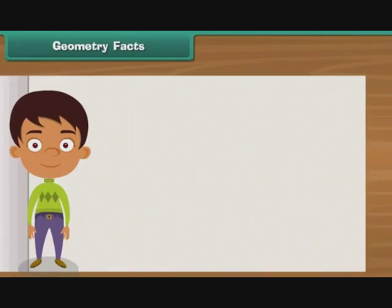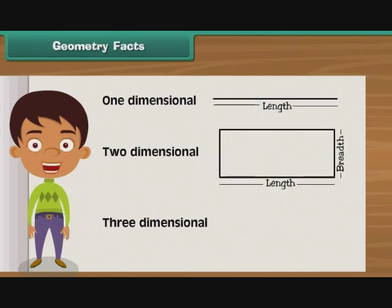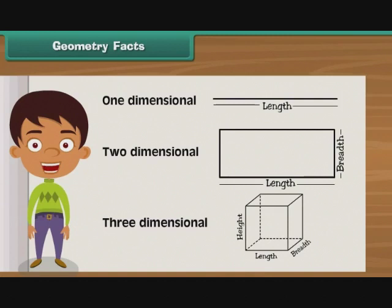Geometry facts. The geometry facts are generally divided into three parts: one-dimensional, two-dimensional, and three-dimensional. The one-dimensional geometry has only length. The two-dimensional geometry is about length and breadth. The three-dimensional geometry is about length, breadth, and height.